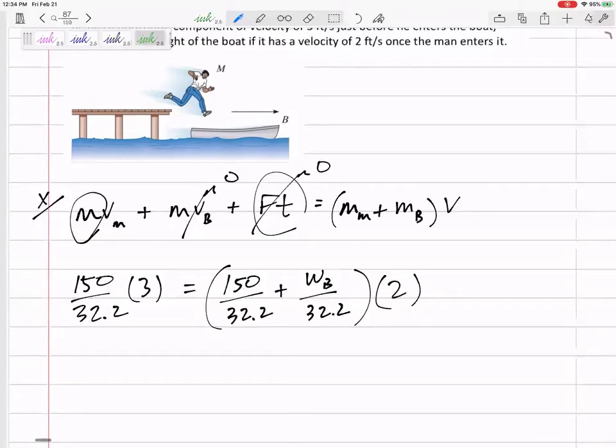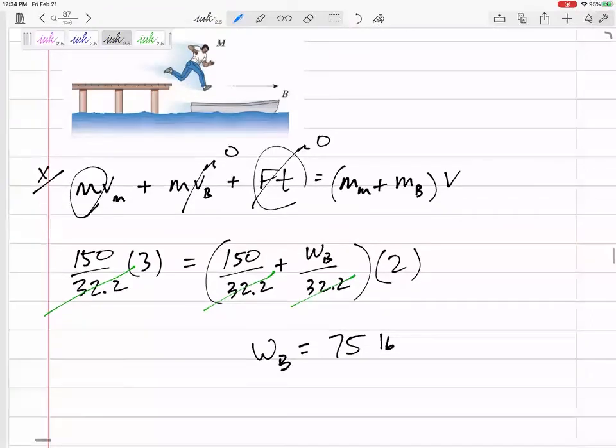And so this X equation, I can solve for the weight of the boat. I could have gotten away with not dividing by 32.2, but only because every single term has the 32.2. So sometimes, if every term has the same thing, we divide both sides out of here. Then we can get the weight. The weight of the boat, 75 pounds.